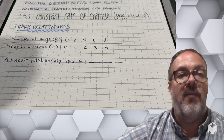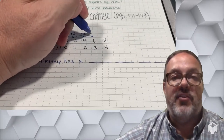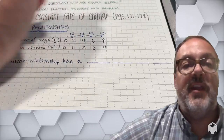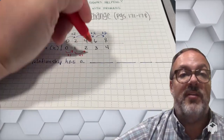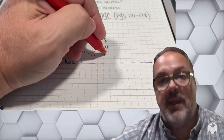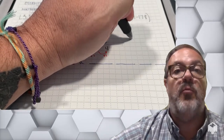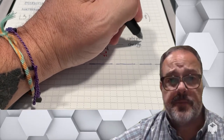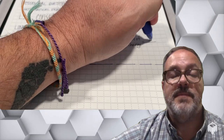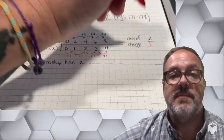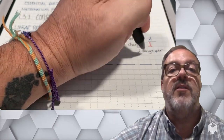Let's say we have the number of songs being played and the number of minutes. If we look at the change in the number of songs, as you can see in this table, the number of songs increases by two each time. The amount of minutes changes by one minute in each interval.